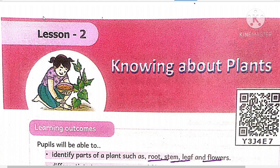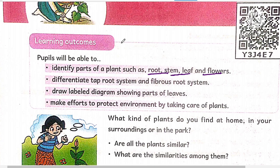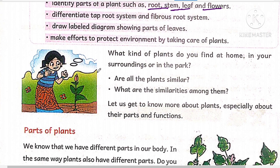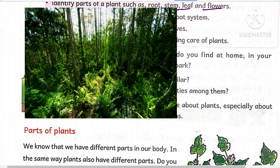You already have an idea that plants have different parts like root, stem, leaf, and flowers. The learning outcomes from this lesson are: students will be able to identify the different parts such as root, stem, leaf, and flowers; tell the functions of plant parts; identify different types of root systems; tell the differences between the tap root system and fibrous root system; and draw and label a diagram showing parts of a leaf.